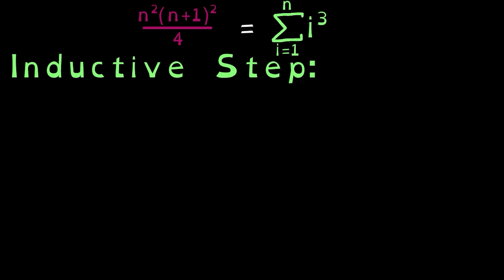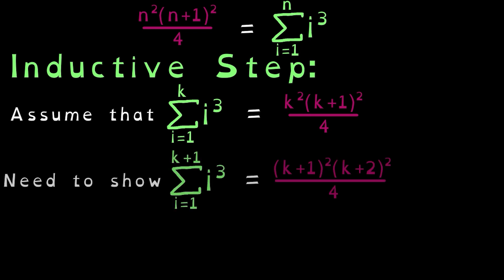Now we have to show that our inductive step works. We'll assume that a generic kth sum works. That is, that for a given k value, it equals k squared times k plus 1 squared over 4. We then show that the k plus 1 sum also has to work. That is, that the summation up to k plus 1 equals k plus 1 squared times k plus 2 squared over 4.